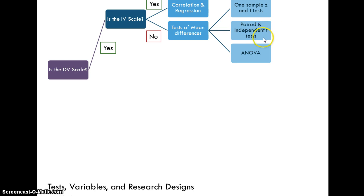And then here, the difference between these two is the research design, a paired sample T test being within subjects, and an independent sample T test being between subjects. And if we have three means or more, then we have analysis of variance, and there's various forms of that as well.